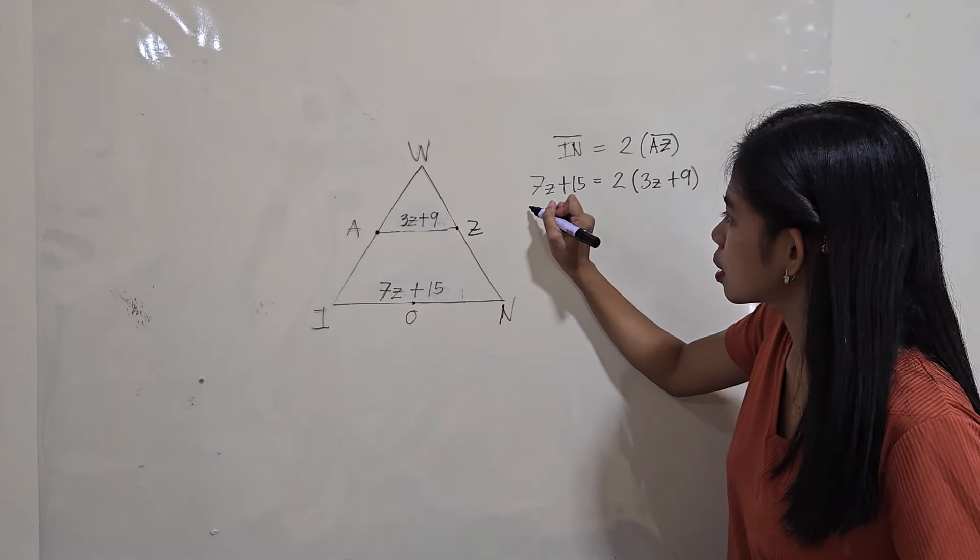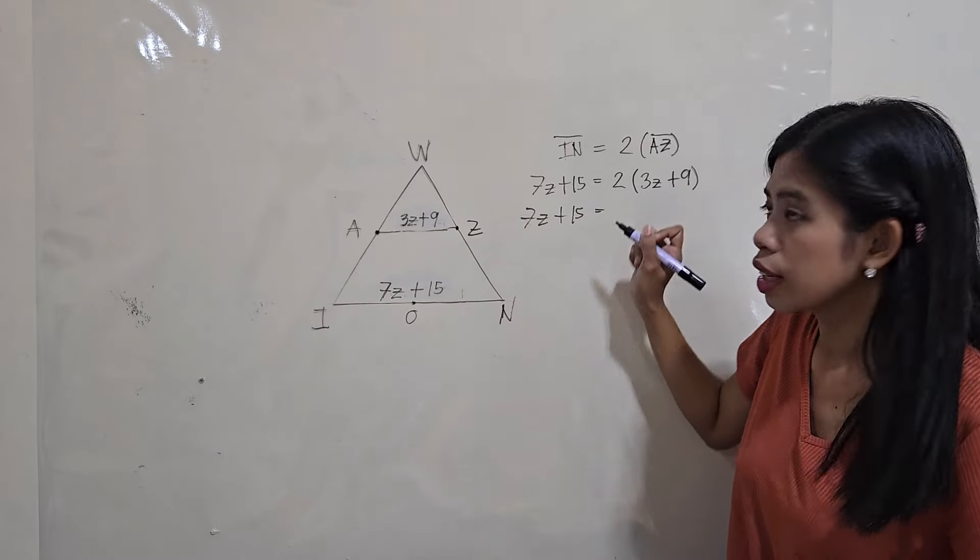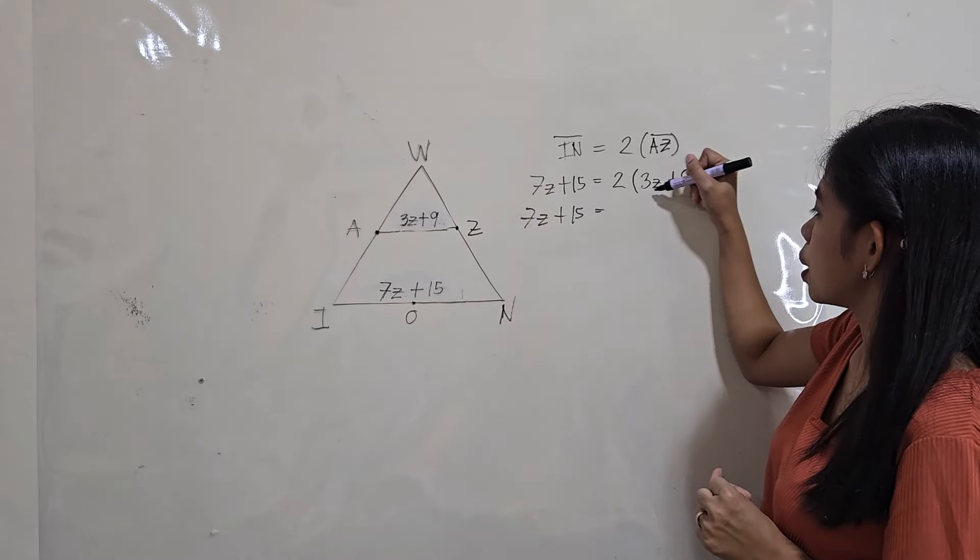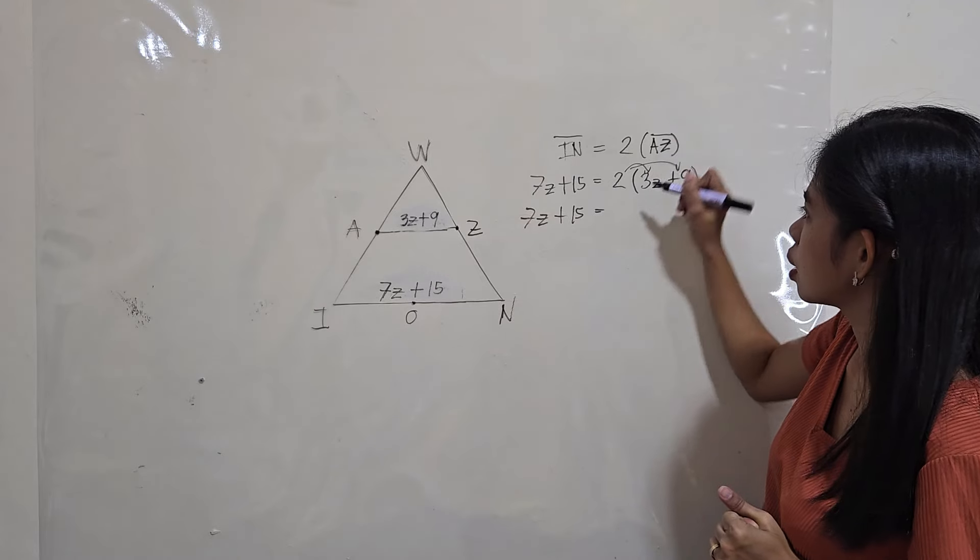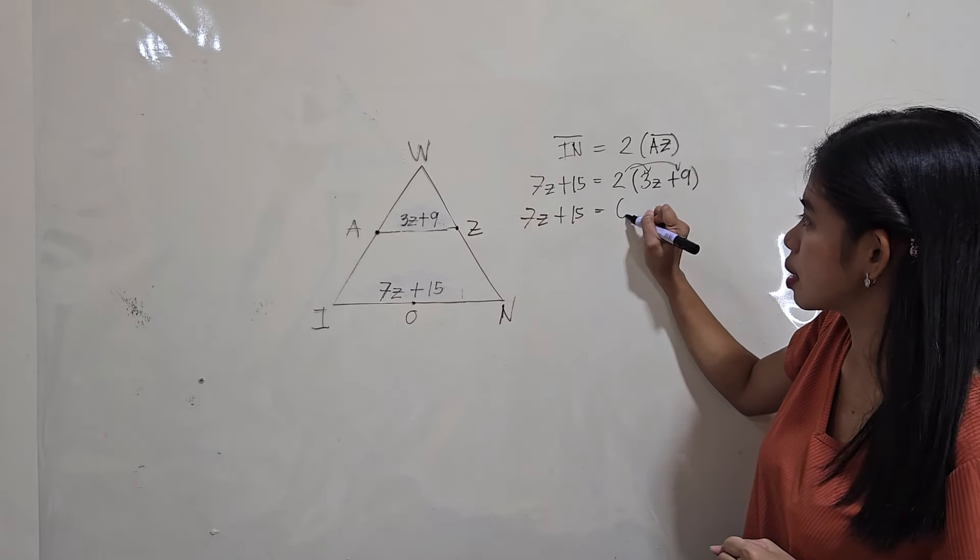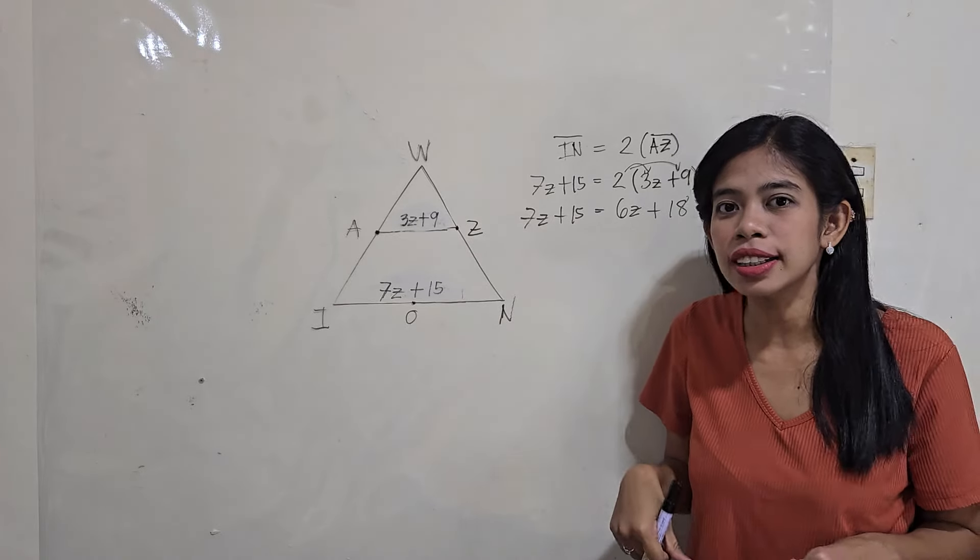All right? So, let's try to answer. We just copy 7z + 15, and multiply the measure of midline AZ by 2. So, that's 2 times 3z, that's 6z. 2 times 9, that's positive 18.